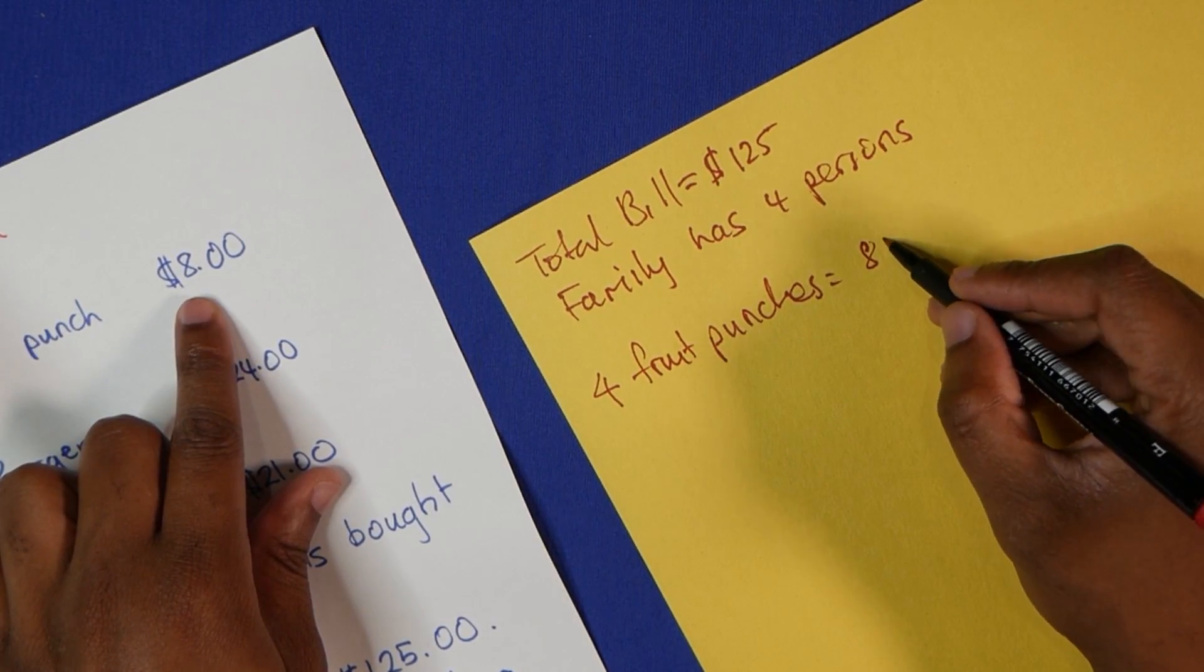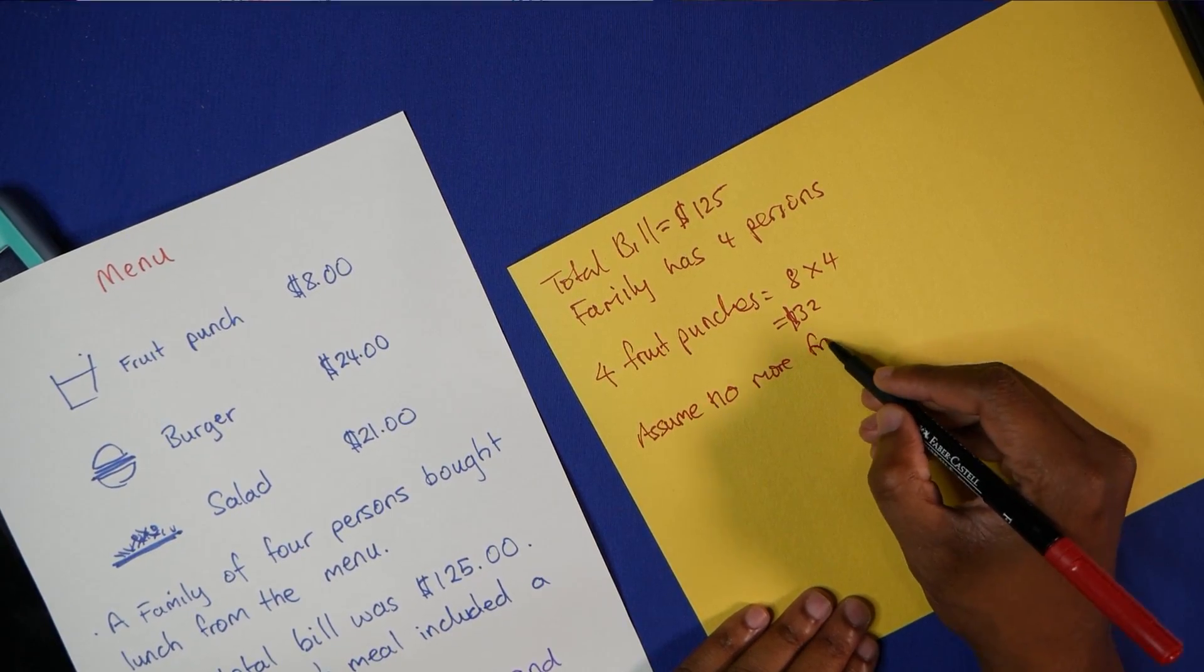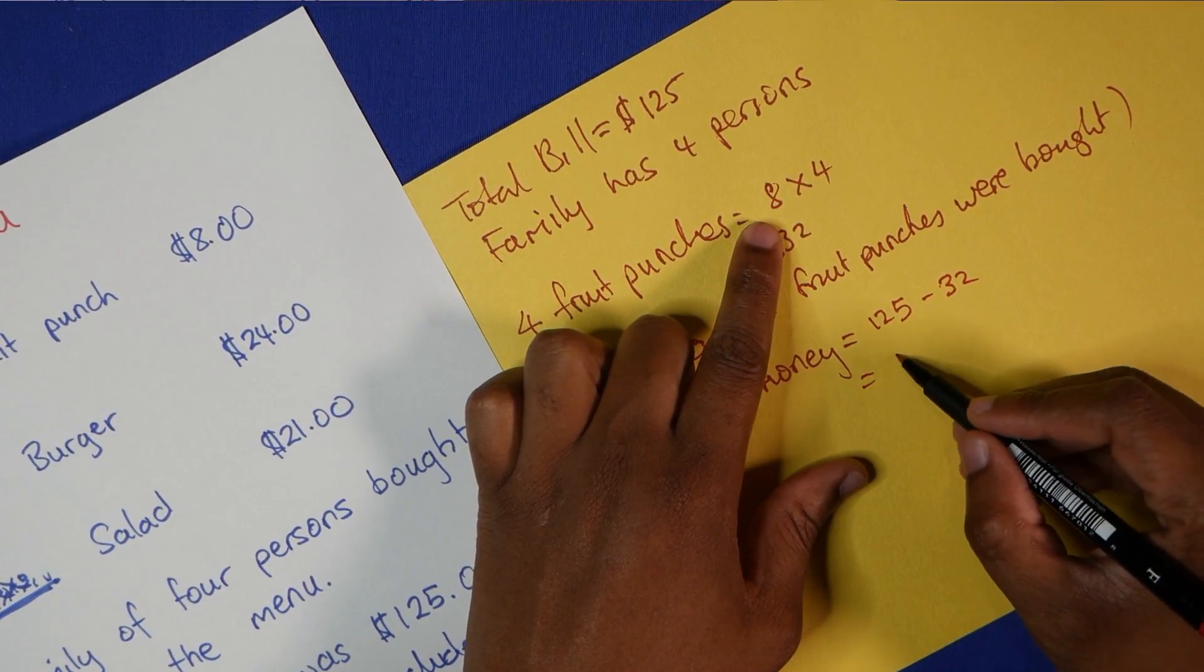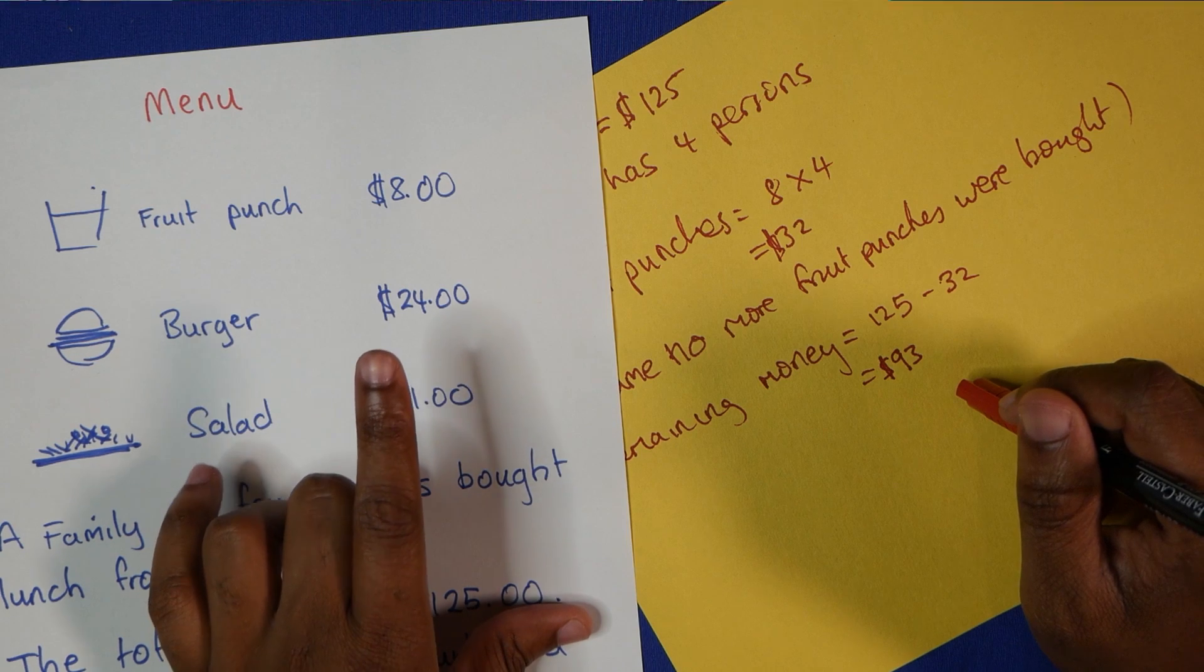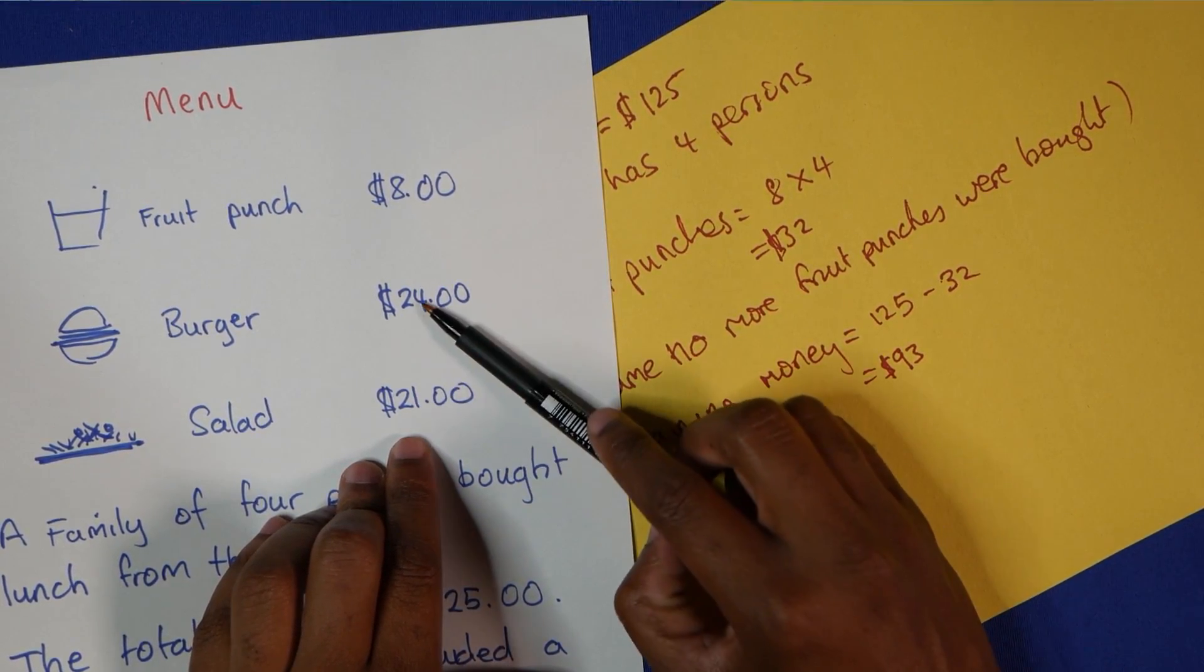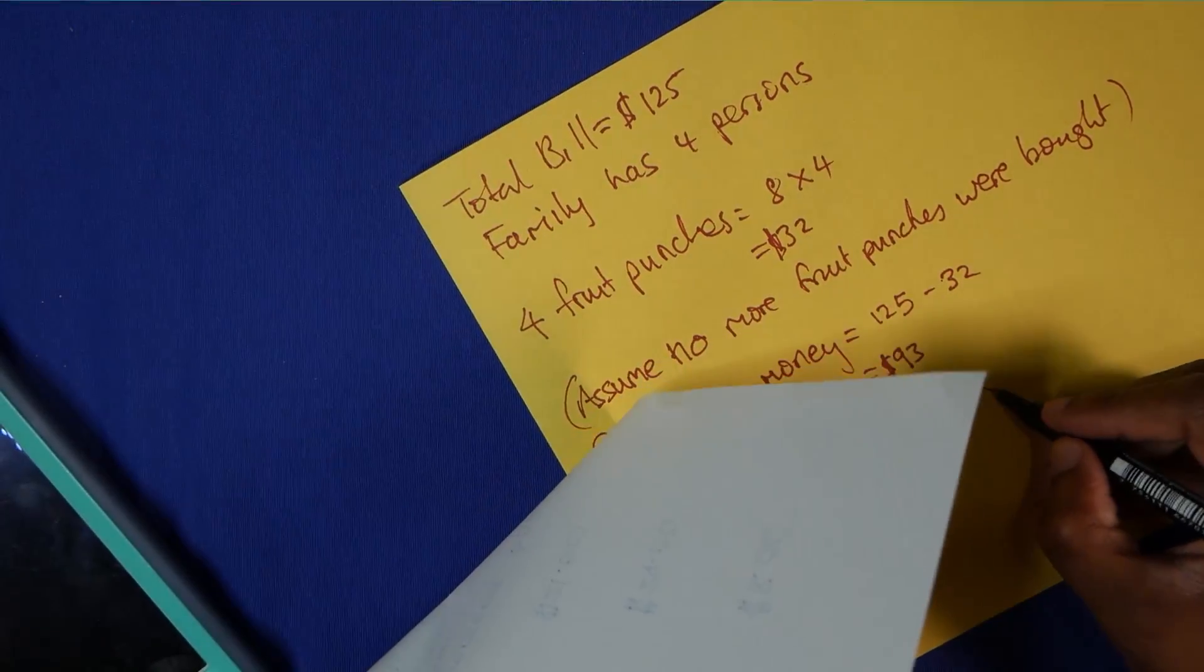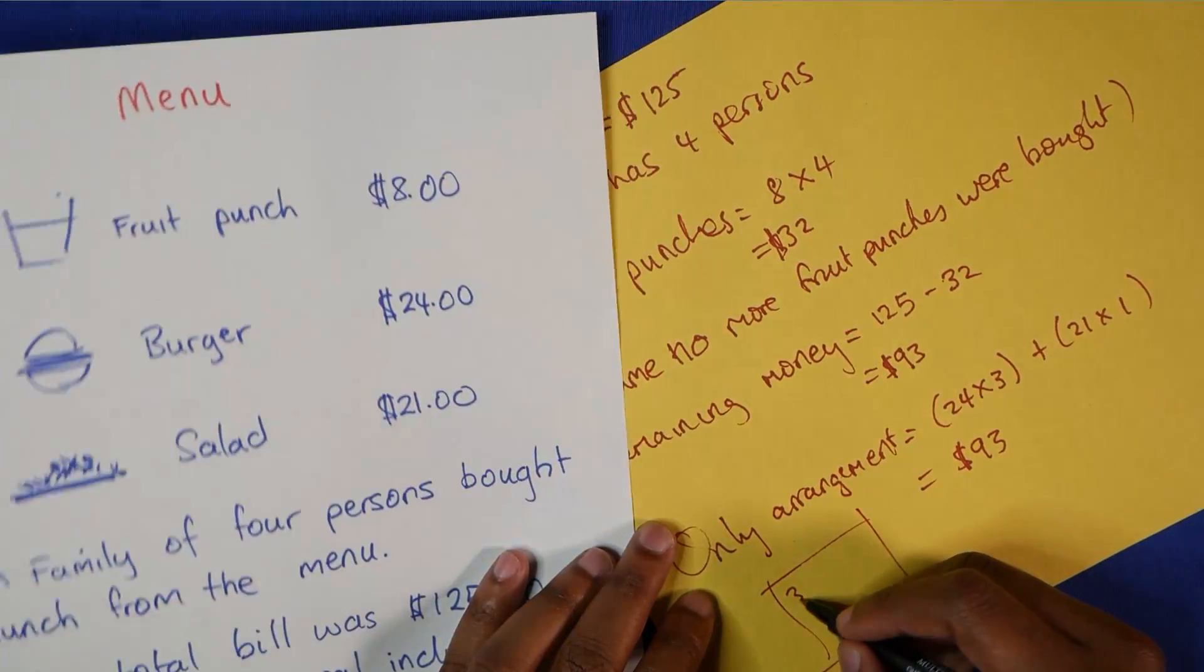So the total bill was $125 and the family has four persons. Since each person had a fruit punch, that's four fruit punches. A fruit punch is $8, so 8 by 4. We will assume no more fruit punches were bought. The remaining money would be 125 take away the $32, that's $93. Now if the burgers are $24 and the salad is $21, the only arrangement that could work out to give 3 at the end here would be 4 by 3 is 12 plus 1. So three of this and one of that. The only arrangement would be 24 by 3 plus 21 by 1, which gives us the 93, which is what we want. This means we had three burgers and one salad being bought.